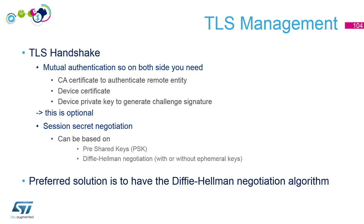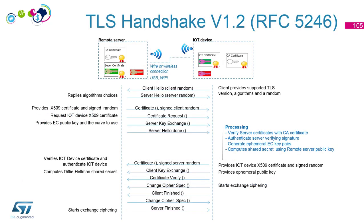Then we will see how we establish the session secret negotiation, relying on Diffie-Hellman — there are other possibilities with pre-shared secrets, but here we will use Diffie-Hellman. So let's go. This is a TLS handshake v1.2, RFC 5246 — many steps, seems quite complicated, but we will go through all these steps and try to understand them.